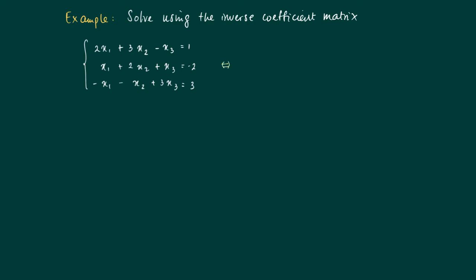Now we will solve a system of linear equations using the inverse of the coefficient matrix, and this is a little more challenging than a 2×2 system. The coefficient matrix is [2, 3, −1; 1, 2, 1; −1, 3, 1] and the system AX = B where B = [1; −2; 3]. We derive the inverse of this 3×3 matrix.